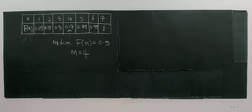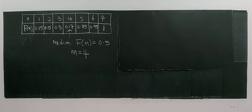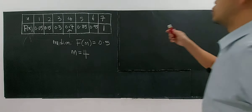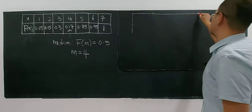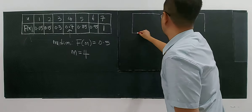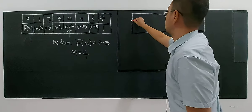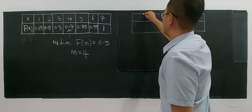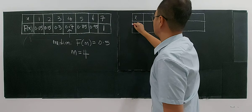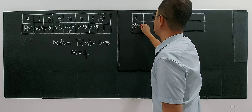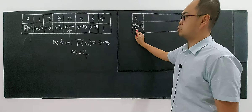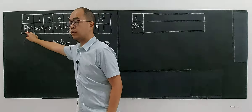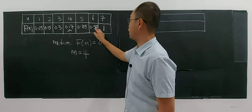Now, this question also asks how to find the probability distribution function from this cumulative distribution table. So, if you want to find the probability distribution table, I'm going to draw everything here. You have x, and definitely the row will be P(X=x). This is the probability distribution table, and this is the cumulative. The difference is that the cumulative adds up to 1.